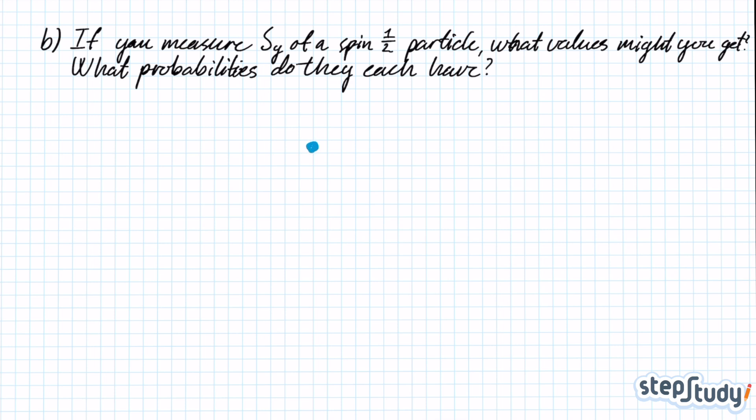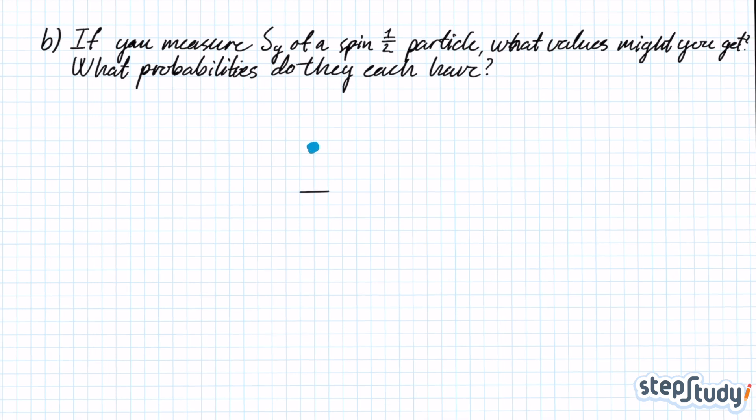As we discussed in problem A, there are only two outcomes of measuring the spin in a certain direction. Imagine you have an apparatus that measures spin in the y-direction. It'll give you either spin up in the y-direction or spin down in the y-direction. We're trying to figure out the probabilities of a particle ending up in one of those baskets.